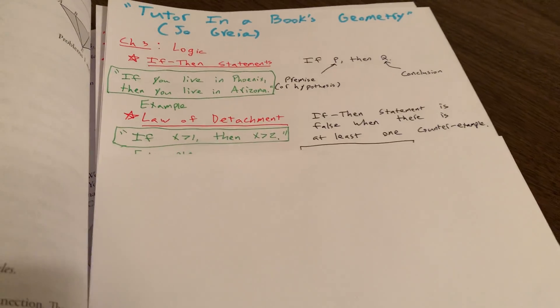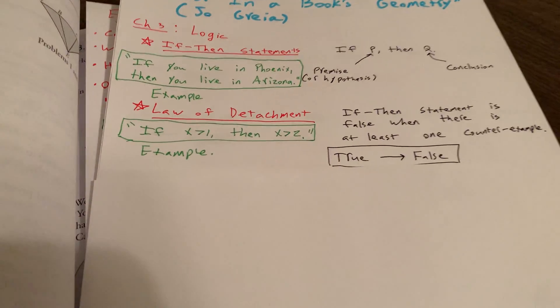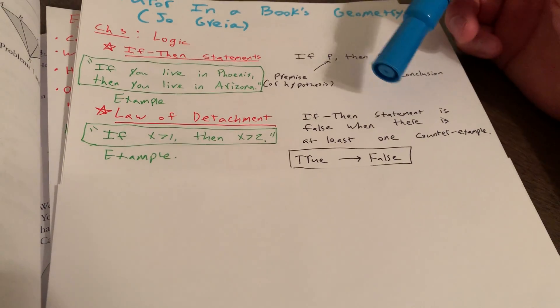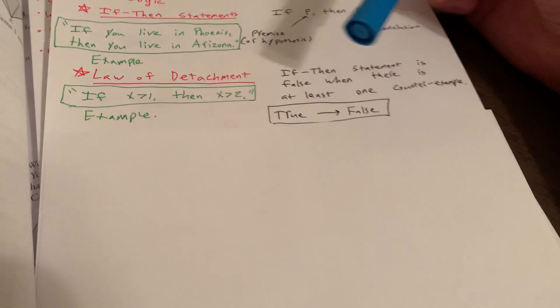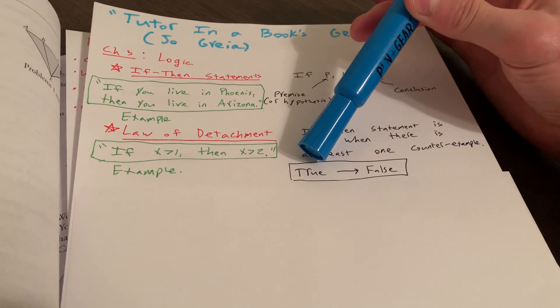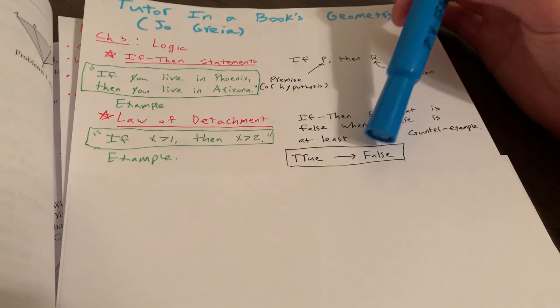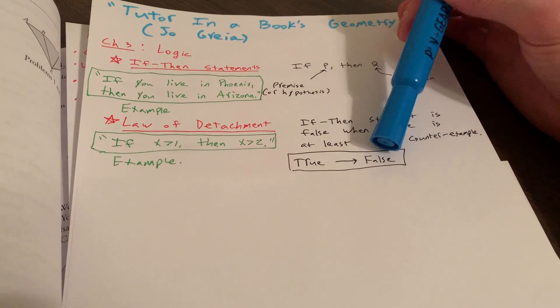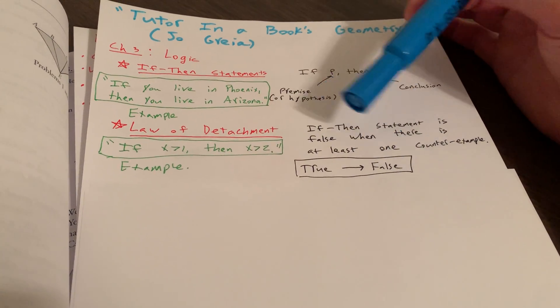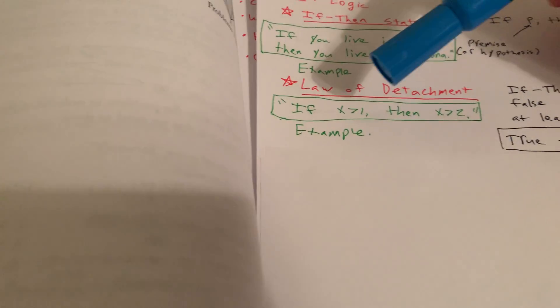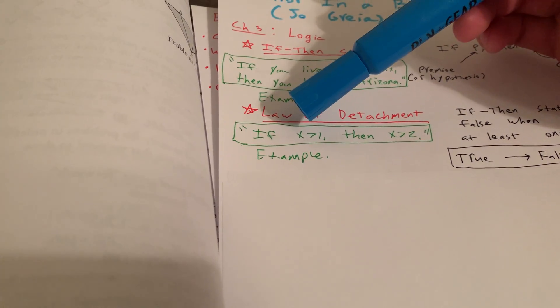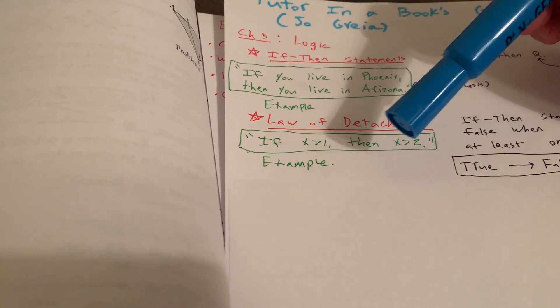And then we have the so-called law of detachment. The if-then statement is false when there's at least one counterexample. So if we have a true hypothesis but it leads to something that's a false conclusion, a false consequent, then the conditional if-then statement is false. Here's an example. If X is greater than 1, then X is greater than 2. Would that be a true or false conditional?